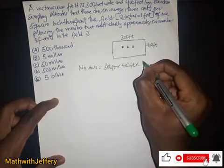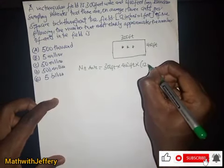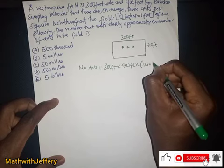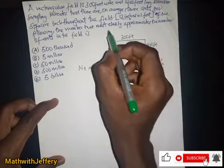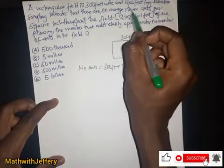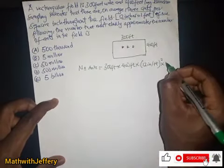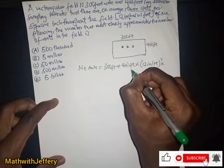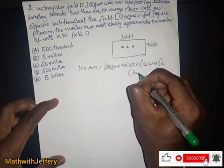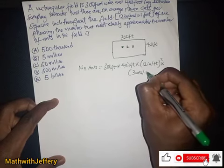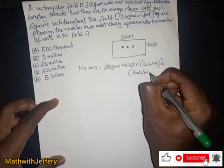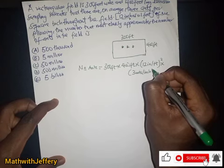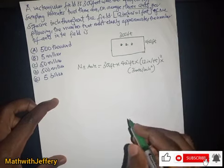Since we are dealing with square units, we square the 12 inches per foot conversion, and then multiply by three ants per square inch. So we have three ants per square inch in our expression.